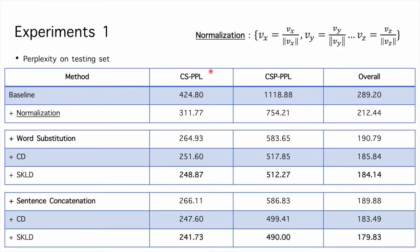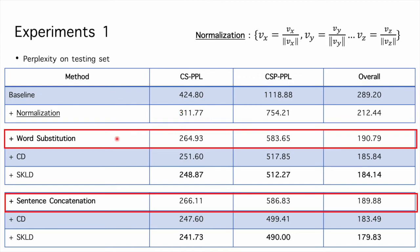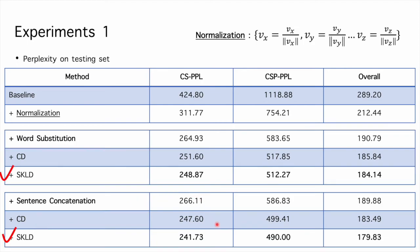We further show the result with normalization technique. We can see the baseline is improved with normalization. With further applying techniques, no matter which kind of pseudo code-switching texts are used for training, constraining projection matrix can improve perplexity. Especially using symmetric KL divergence as the constraint.